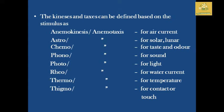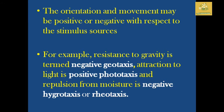Kineses and taxes can be defined based on the stimulus type. These include anemotaxis for direct air currents, astrotaxis for solar and lunar orientation, chemotaxis for taste and odor, pheromones for chemical signals, phonotaxis for sound, phototaxis for light, rheotaxis for water, thermotaxis for temperature, and thigmotaxis for contact/touch of the insect.